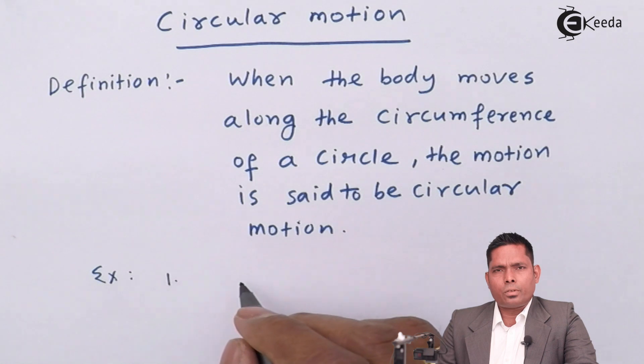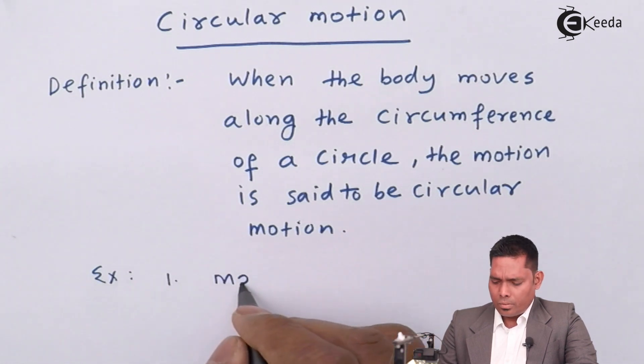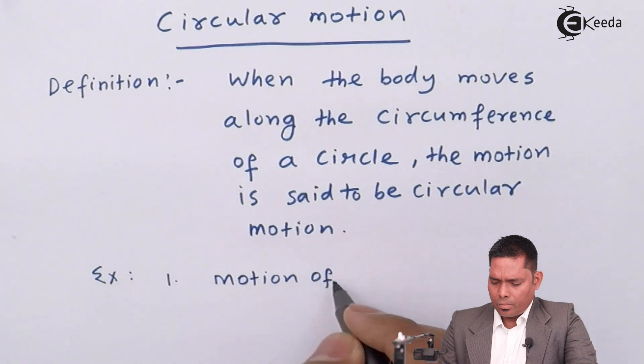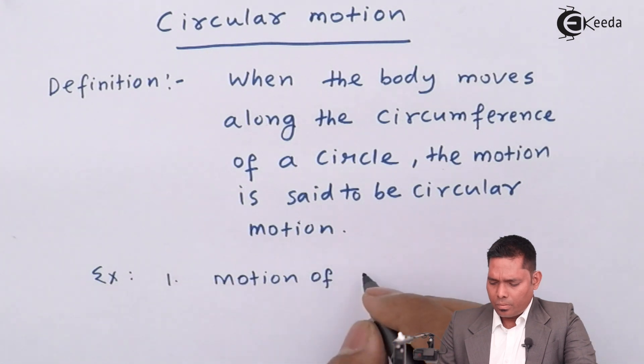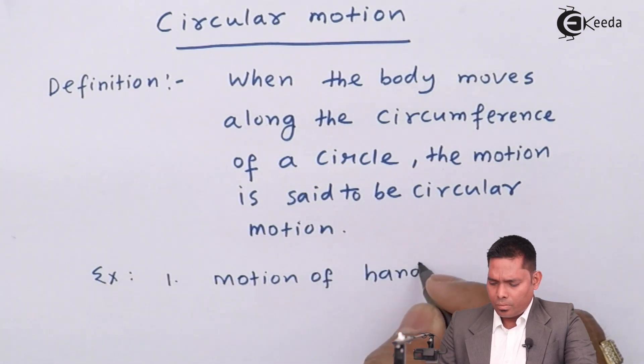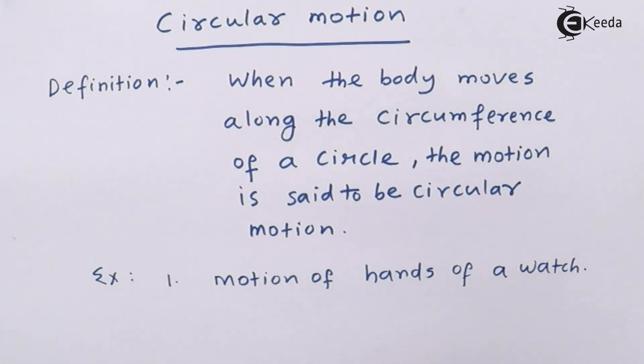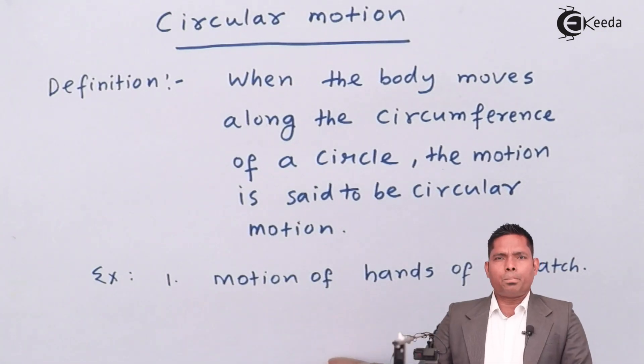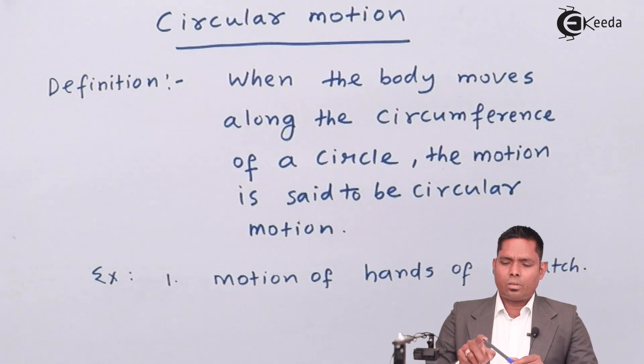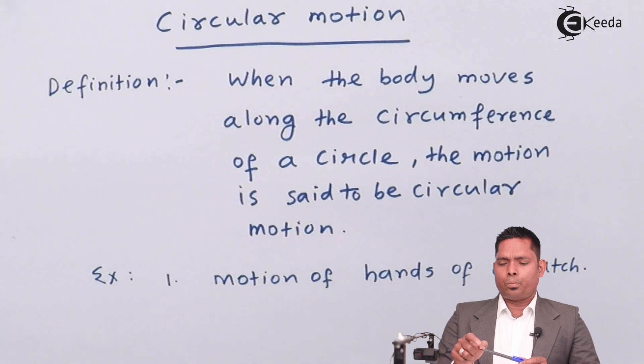Motion of hands of a watch. This is a circular motion. Motion means we are talking about any point on the hands. That is suppose the tip of the hand. If you point at the tip, the tip moves in a circular path.